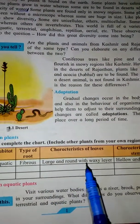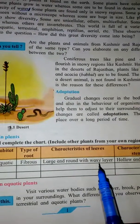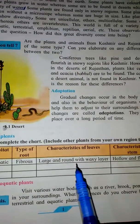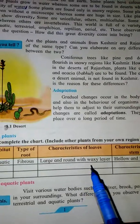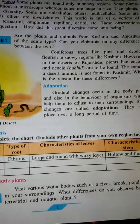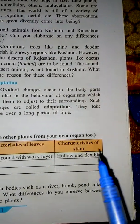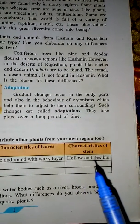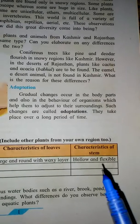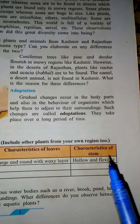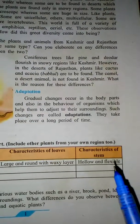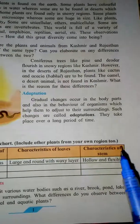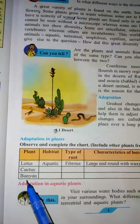The characteristics of the leaves — they are large and round with a waxy layer, and spread wide. The characteristics of the stem — it is long and flexible, not breaking easily. The roots are also present. Finally, cactus is another example to study.